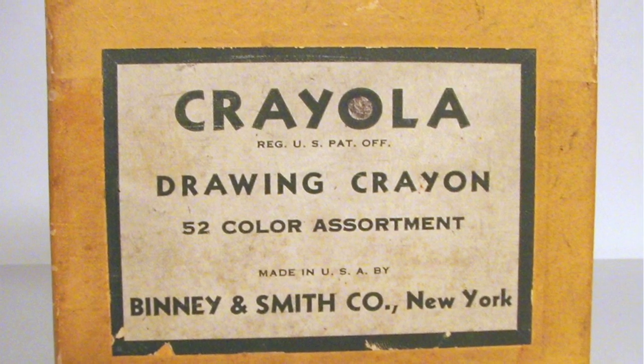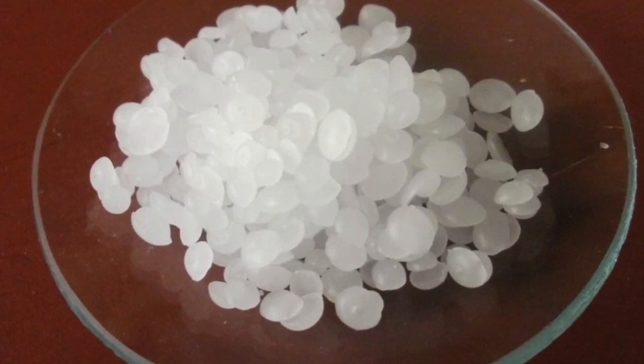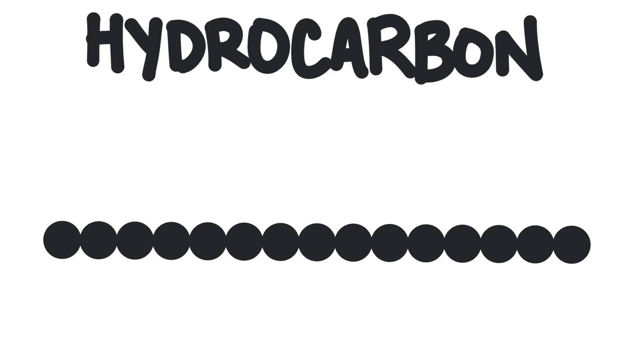Crayons are primarily made of paraffin, a soft solid substance composed of hydrocarbon molecules. Hydrocarbons are molecules that are made of carbon and hydrogen atoms.